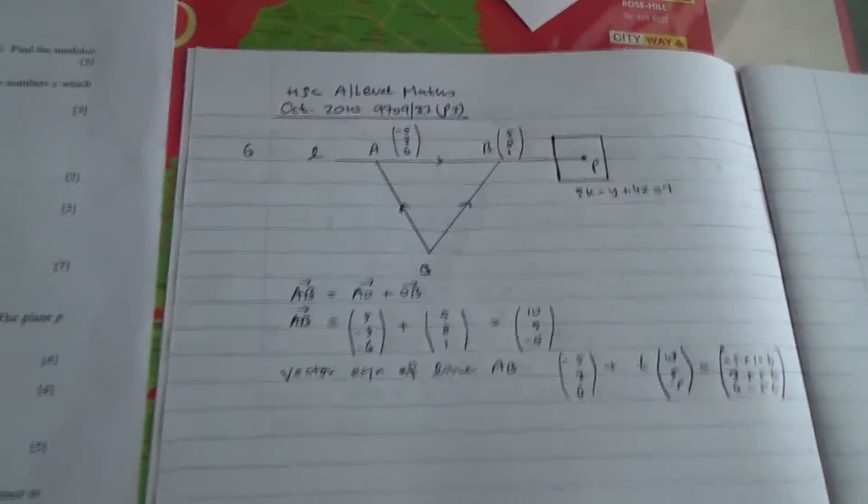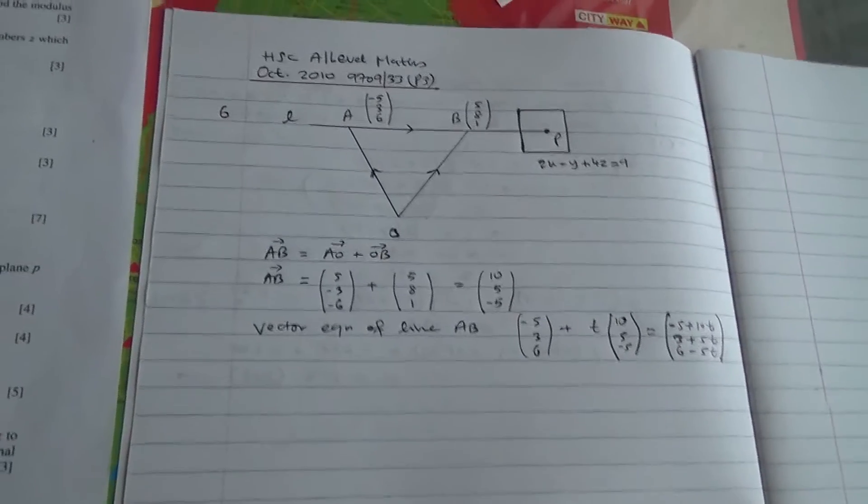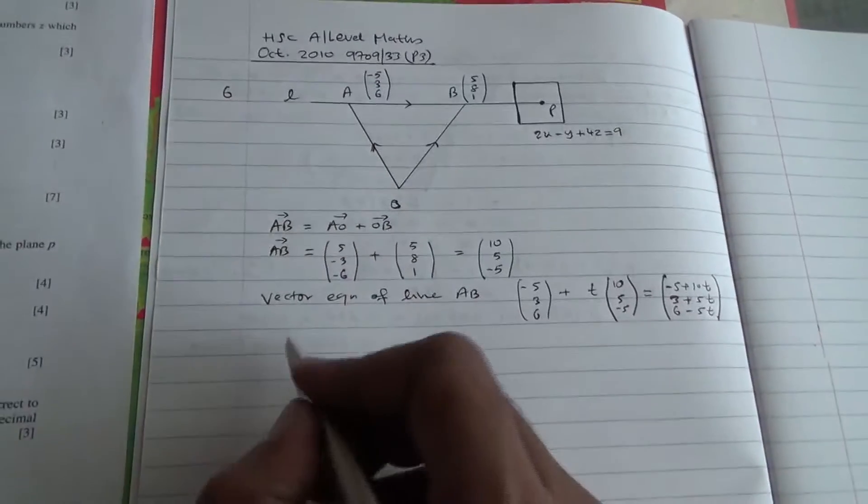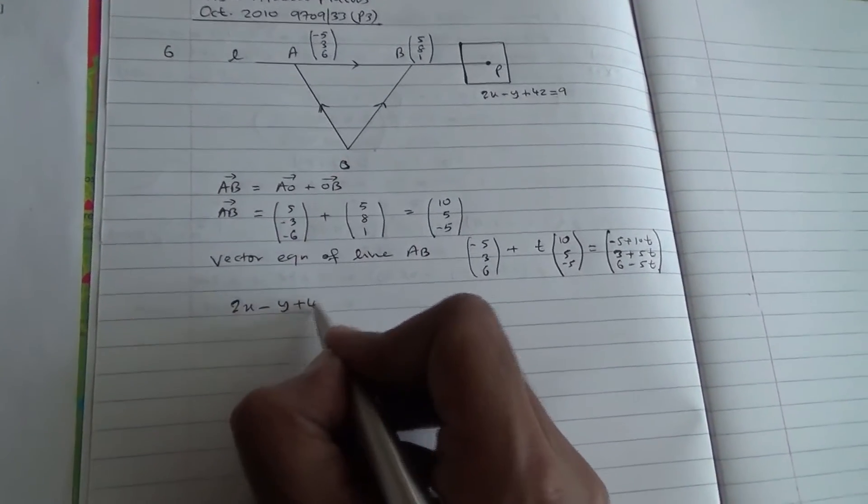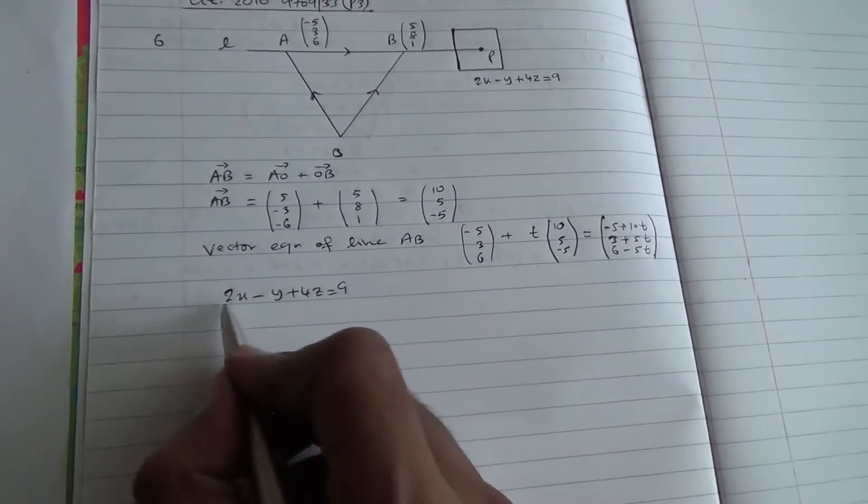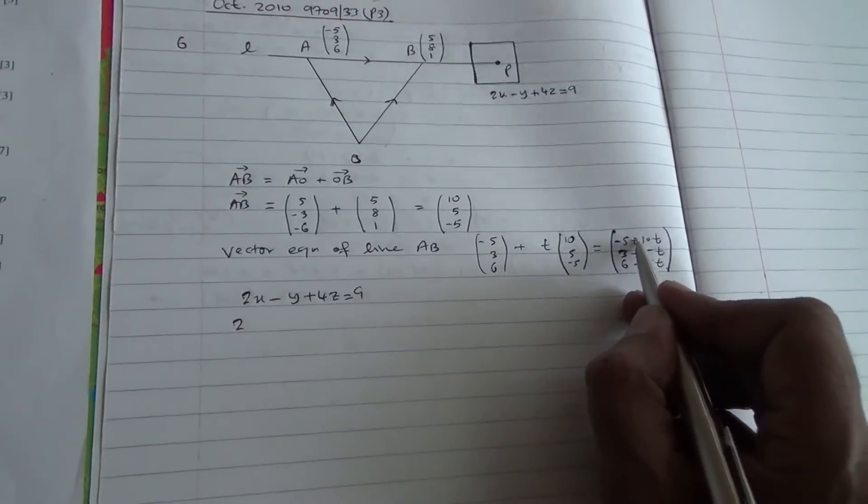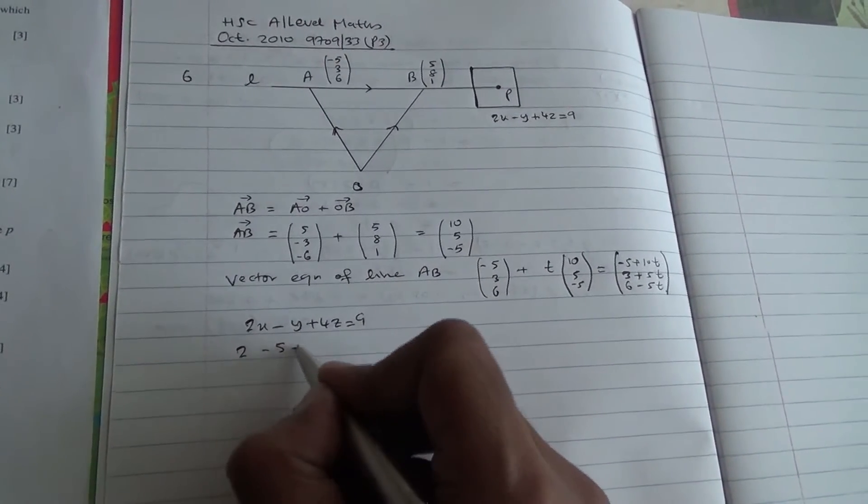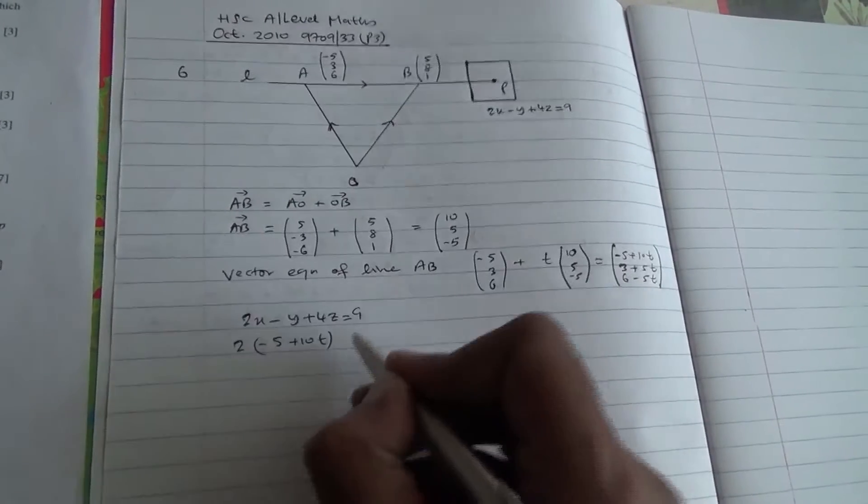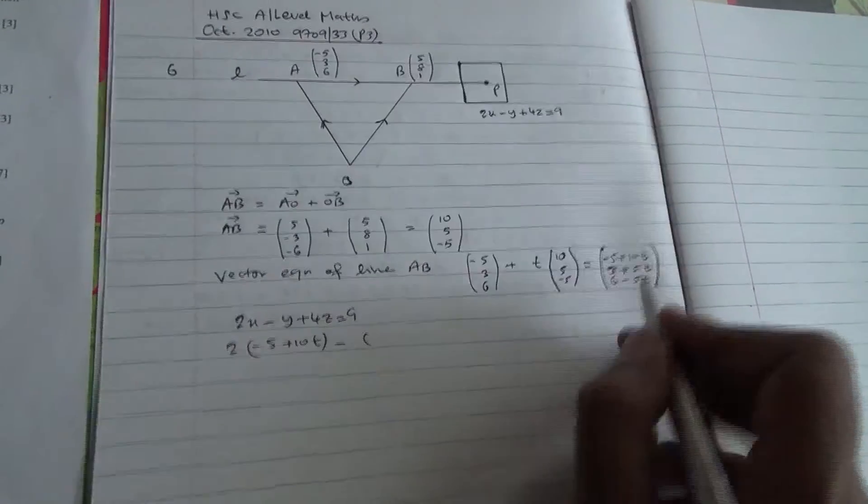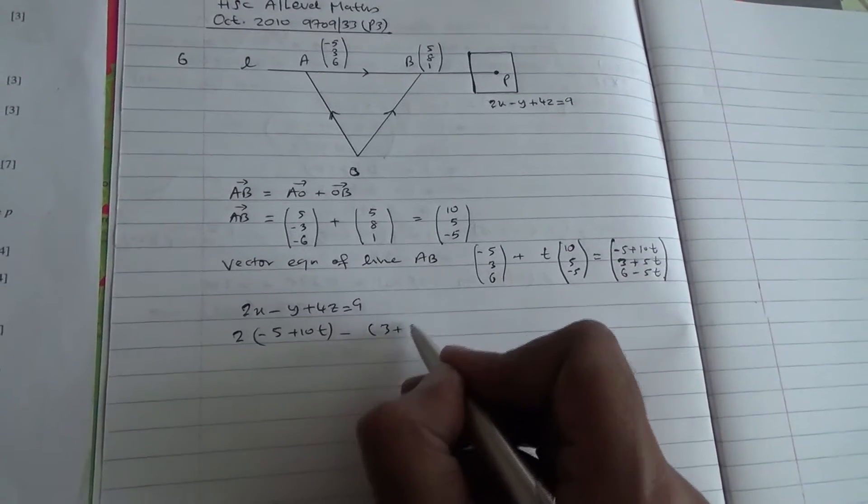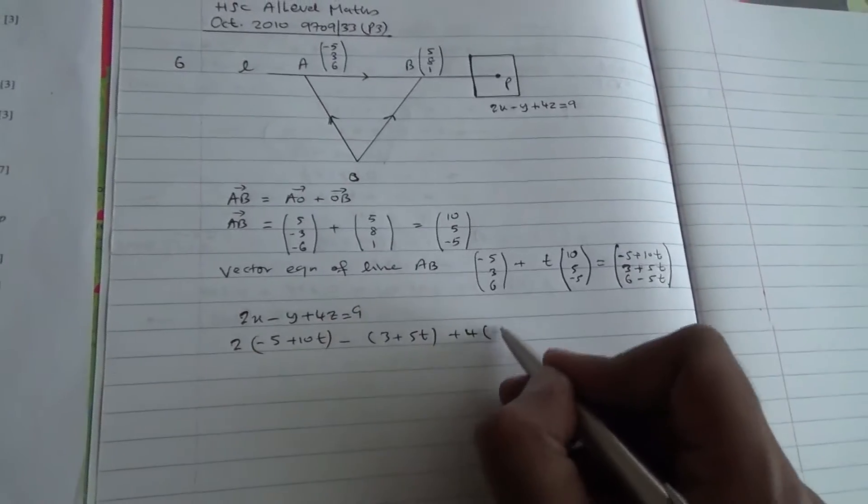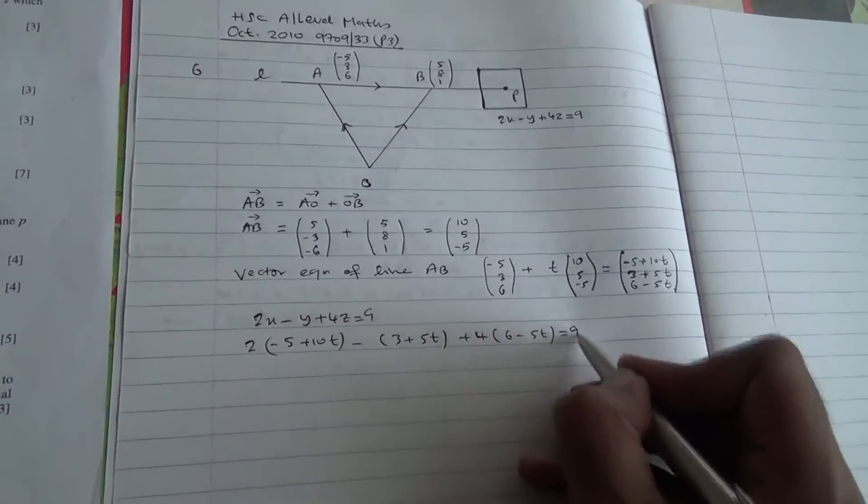Now, our aim is to be able to find T. So, what equation do you have? You do have 2x - y + 4z = 9. 2 times x, so 2 times (-5 + 10T), this is x, minus y, which is (3 + 5T). Then, plus 4z, that is 4 times (6 - 5T), and all of that's going to be 9.